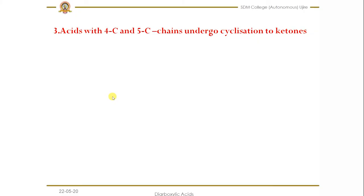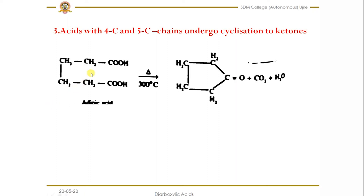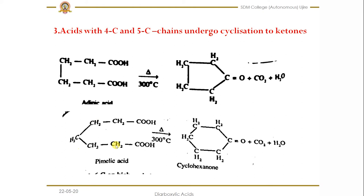Next, acids with four or five carbon chains in between the two carboxylic groups undergo cyclization to give ketones. You can see the example with four carbons between the two carboxylic groups, and another with five carbons. Cyclization takes place along with decarboxylation: one carboxylic group loses CO2 and the other loses a water molecule, and then cyclization takes place.